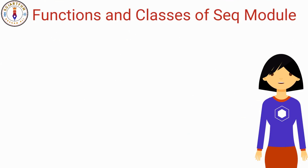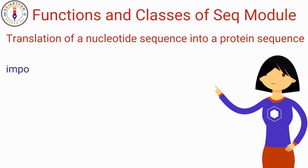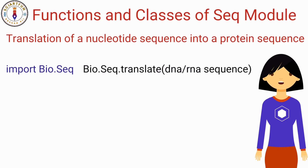Now let's come to the last function of today's lesson — the translate function. This function is used to perform translation of a nucleotide sequence into the protein sequence, that is, the amino acid sequence. Suppose you imported the module using method A. Type bio.seq followed by a dot, then select translate. Inside the parenthesis, put your nucleotide sequence and hit enter — your sequence will be converted into the amino acid sequence.